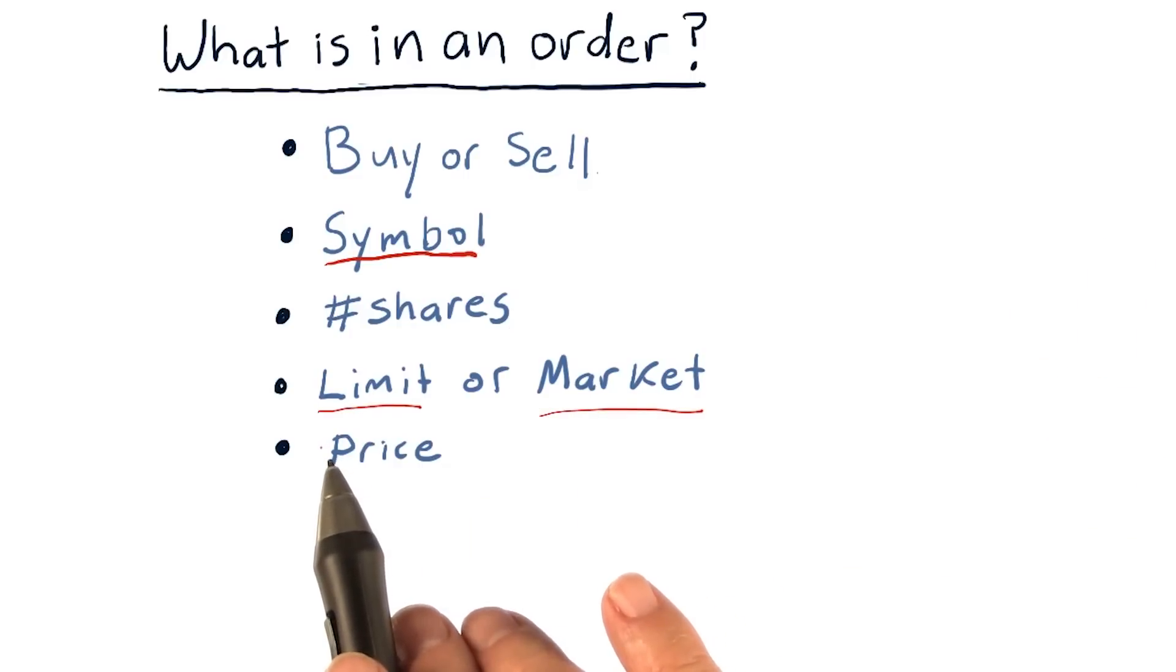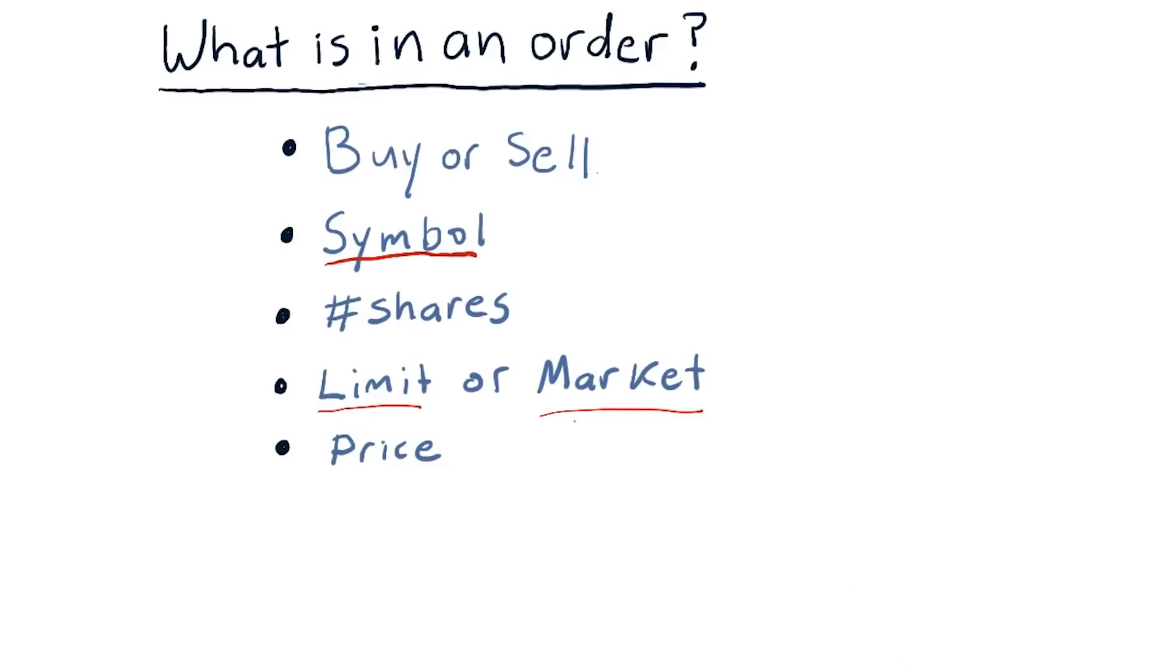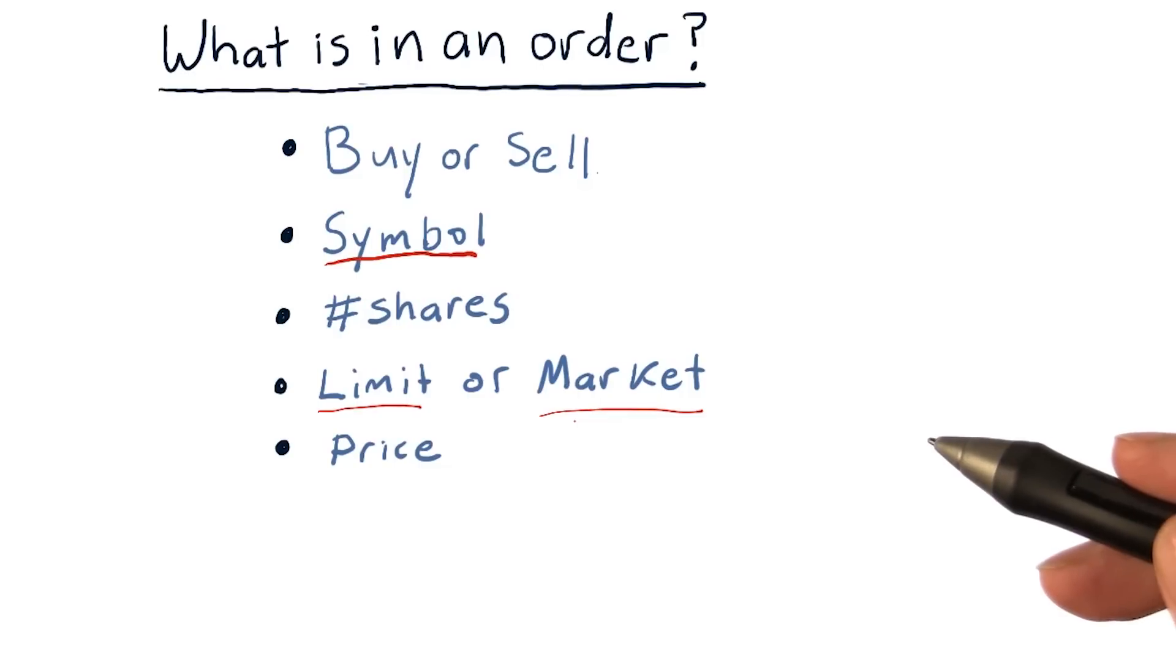Next, you need to tell your broker whether this is a limit order or a market order. Let's start with market first. Market means you're willing to accept a good price, but essentially whatever price the market is currently bearing. And I'm going to show you in a moment how that's determined.